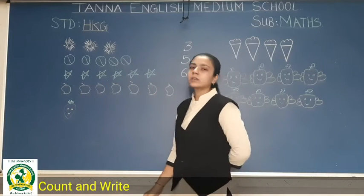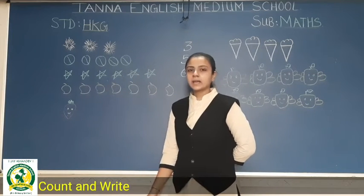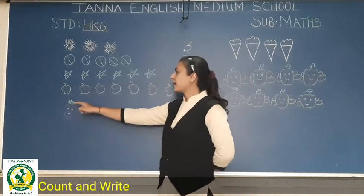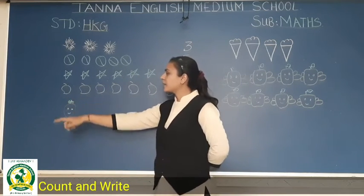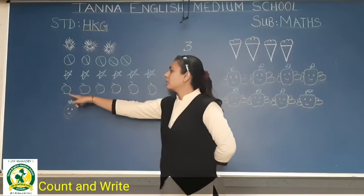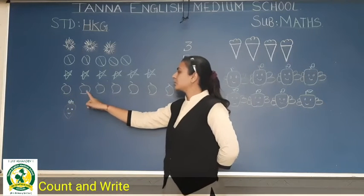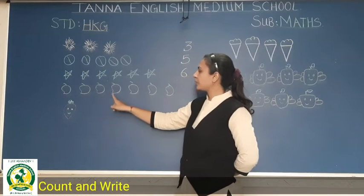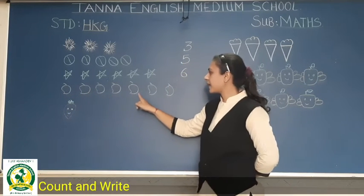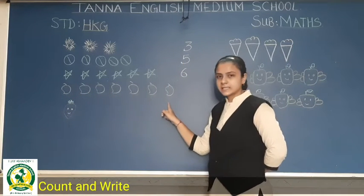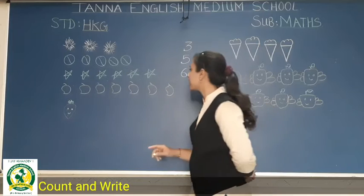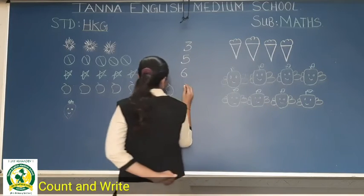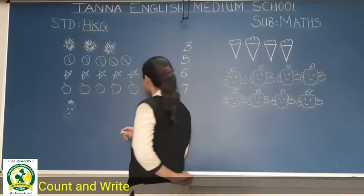Aak sabko kama mati reekna hai, right? Mangoes. How many mangoes? One, two, three, four, five, six, seven. Seven mangoes. So right here, seven.